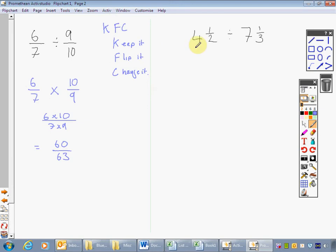This one here. 4 and a half divided by 7 and a third. Again, the problem here is we've got mixed numbers. Change it to the top heavy fractions. 4, 2s are 8. So that's the same as 9 halves divided by 3 7ths of 21. And the other one is 22. 22 thirds.